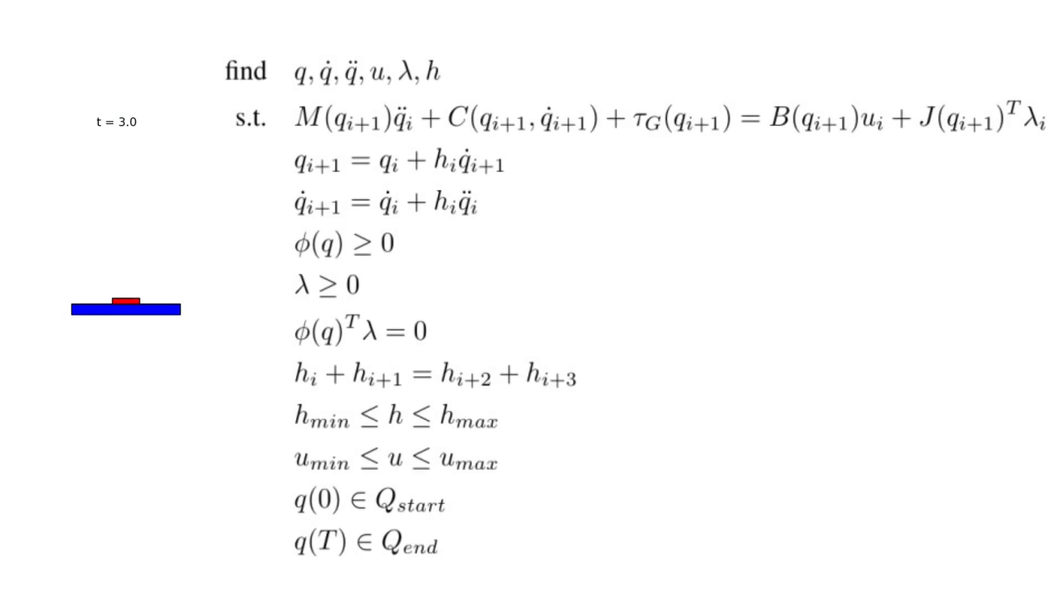The full trajectory optimization problem is shown here. The first three constraints enforce the dynamics of the system, while the next three provide the implicit model of contact dynamics.